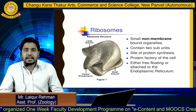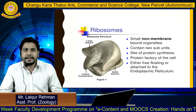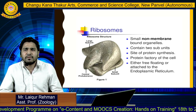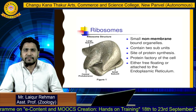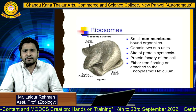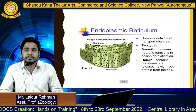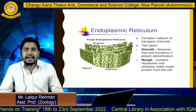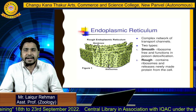Ribosomes are small, non-membrane-bound organelles containing two subunits. They are the site for protein synthesis — we can call them the protein factory of the cell. They are either free-floating or attached to the endoplasmic reticulum.